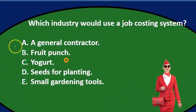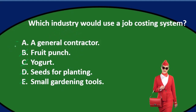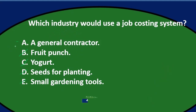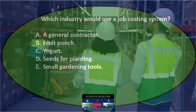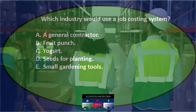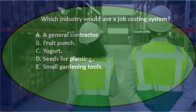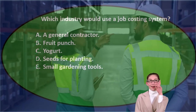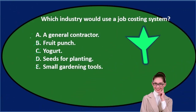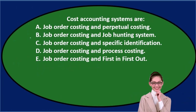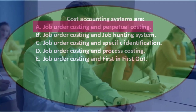None of B through E involve customization. If we saw the word 'customized,' that would usually confirm a job cost system. A general contractor, by the nature of contracting, typically works on different jobs — contracting is tracked differently and each job is typically unique. So the final answer is A — a general contractor. Which industry would use a job costing system? A: a general contractor.